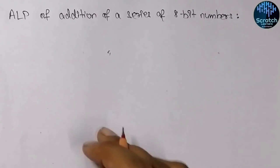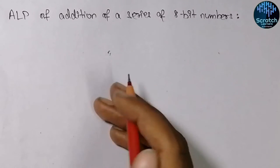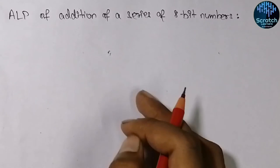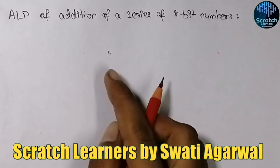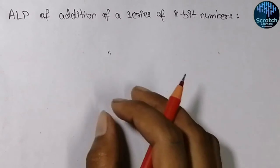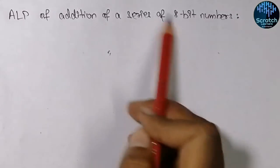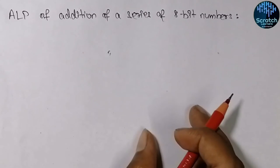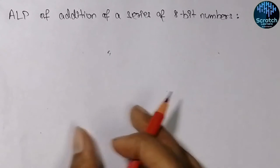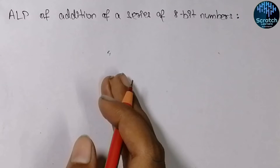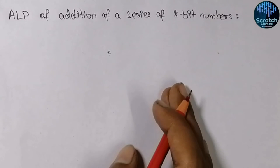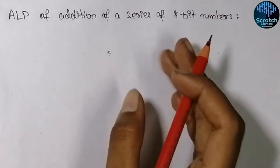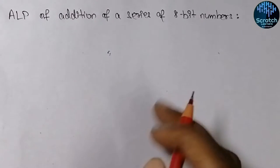Hello guys and welcome back. Today's topic is the assembly language program for addition of a series of 8-bit numbers. Till now we have done the computation of one or two 8-bit numbers, but now we need to find the addition of a series of 8-bit numbers. We will take input of many numbers through a data array and find the summation of all those numbers. We will use the concept of an array and first input the total number of elements.